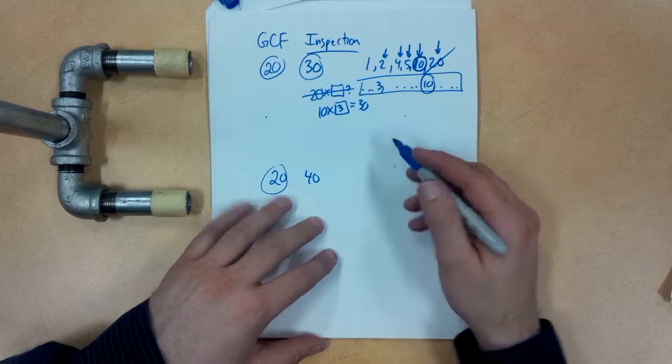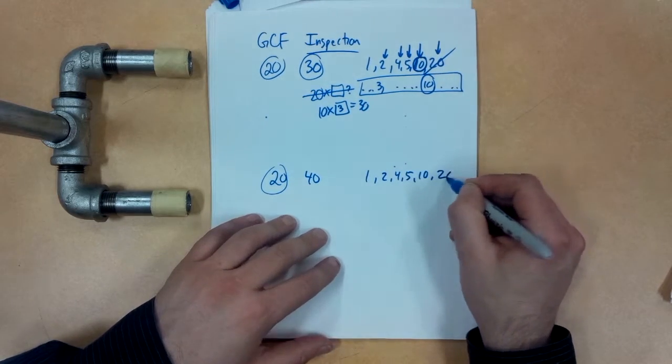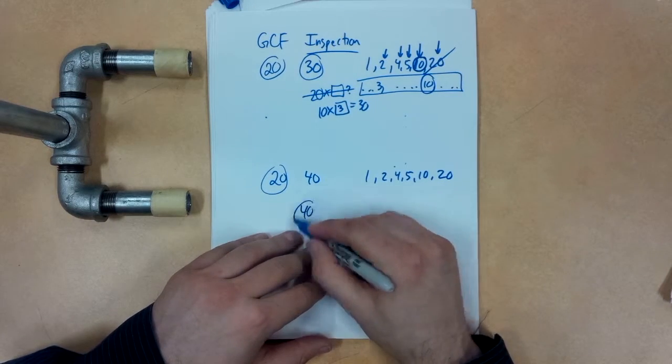I'm going to find the factors for the smaller number first. Again, 1, 2, 4, 5, 10, 20. Okay, now trying to find the factors for 40,